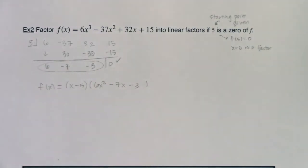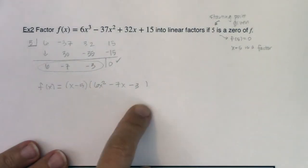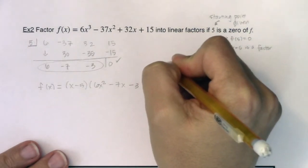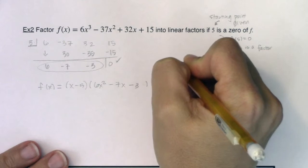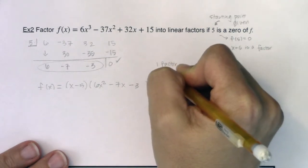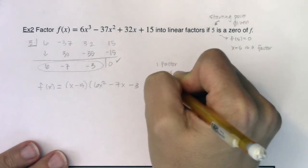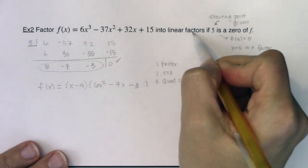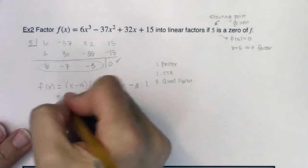So it can help you not only tell you x minus 5 is a factor, but it tells you the remaining factor. Now at this point you have a quadratic. And we've talked multiple times on how to handle a quadratic. You could factor the quadratic, you could complete the square, or you could use the quadratic formula. Now the directions on here said break it into linear factors, so let's try to factor this.